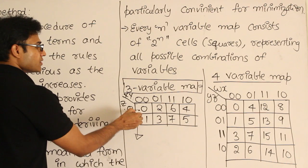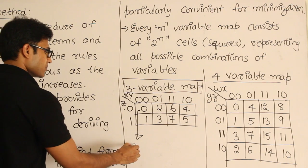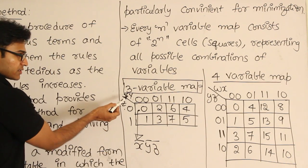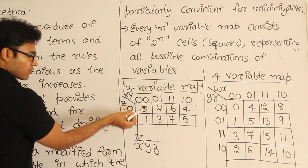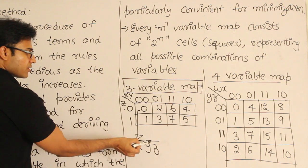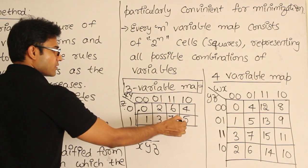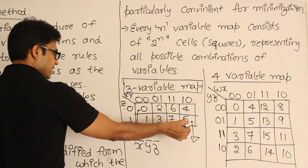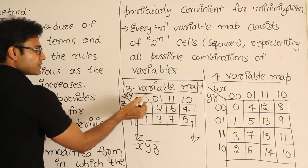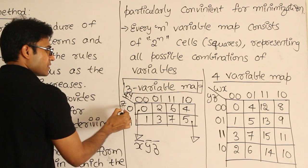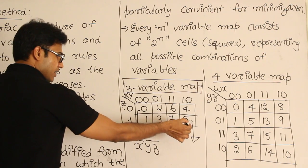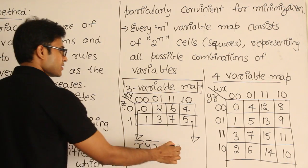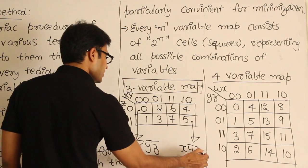Cell zero corresponds to the min term x-prime, y-prime, z-prime. Why? Because x and y are 0, 0 — therefore x-prime, y-prime — and z is 0, therefore z-prime. If you want to know which min term corresponds to another cell, just look at the combination: x is 1, y is 0, and z is 1. So this cell corresponds to x, y-prime, z. That is how you can represent each cell.